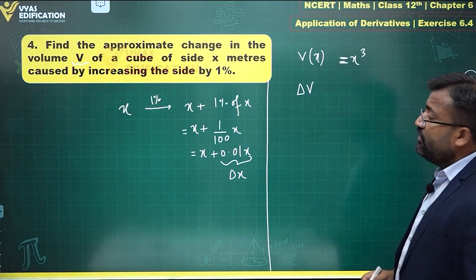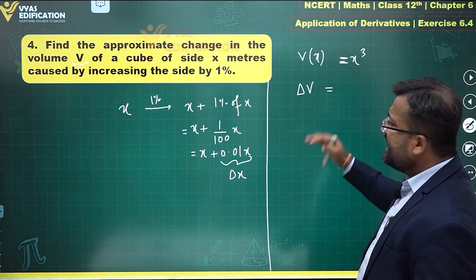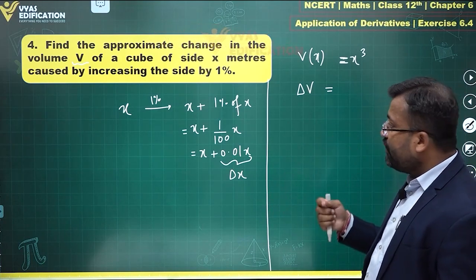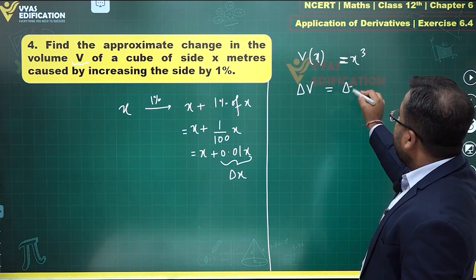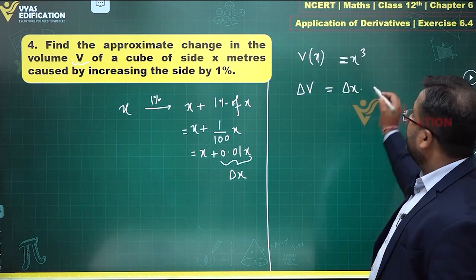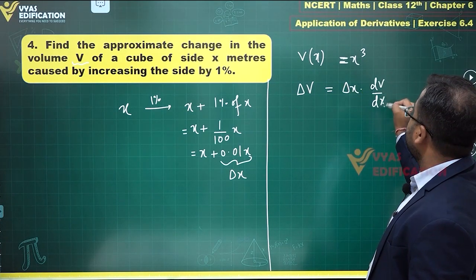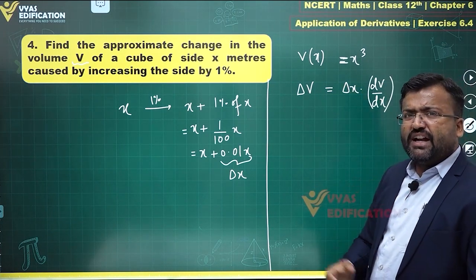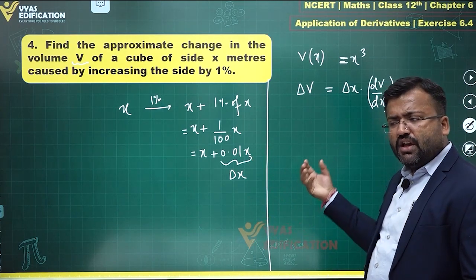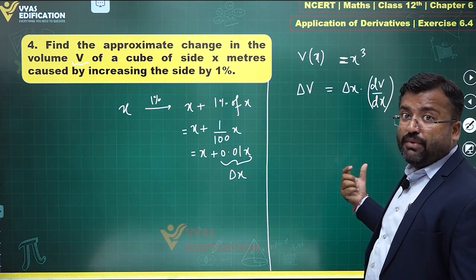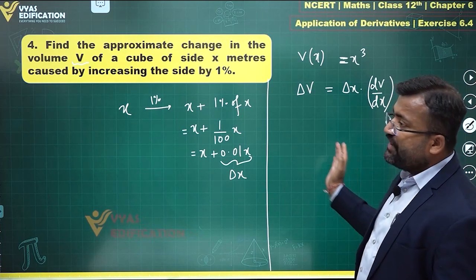Now ΔV can be found very easily. That can be found by taking this change in volume, which is actually equal to Δx times the derivative, that is dV/dx, which is what I am interested in. You observe that f of x plus Δx is f of x plus Δx times f prime x.